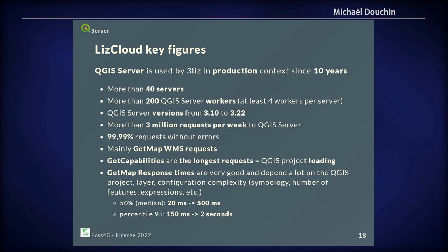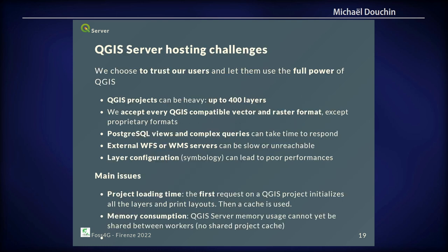QGIS Server can respond well to a lot of browsing — many GetMap, GetPrint, and GetCapabilities requests. The main requests are GetMaps with few errors. The GetCapabilities request — which loads the project like you do in QGIS Desktop — is the longest. GetMap response times are very good compared to other servers, not better or worse. Performance depends a lot on the complexity of the project, the layers, the symbology, and what needs to be rendered.